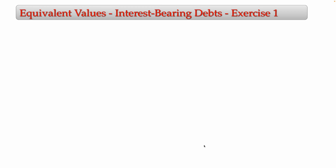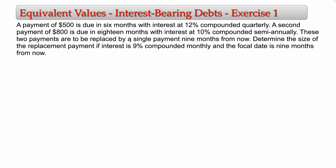In this video I continue to speak about equivalent values, but in this case we are going to solve problems in which we have debts that bear interest — interest-bearing debts. This is exercise one. The first problem: a payment of $500 is due in six months with interest of 12% compounded quarterly. The 12% is not how money is worth now — it's actually the interest on this debt, compounded quarterly. That's the key difference in this type of exercise.